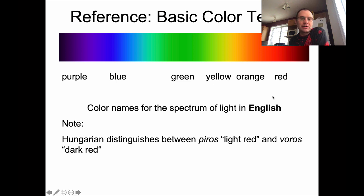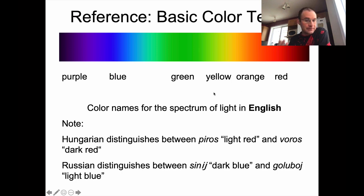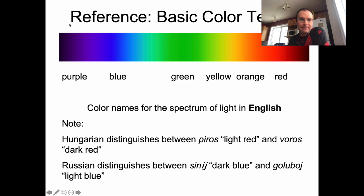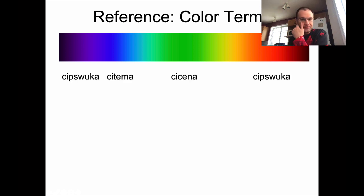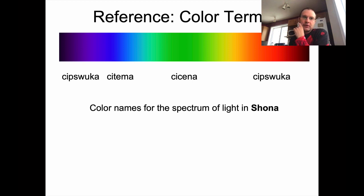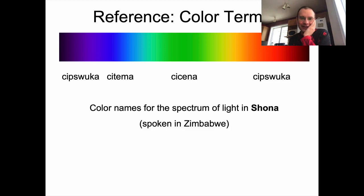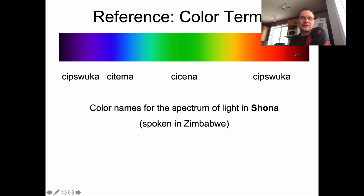Then there are languages that go in the other direction and have fewer distinctions than English. An example is Shona, spoken in Zimbabwe. In Shona, you have citema meaning something like blue, cicena meaning something like green, then cipsuka on either end of the spectrum — so red and purple are kind of the same thing. There's no strict term for yellow. I actually encountered this in undergrad in a field methods class with a Shona speaker, and I asked him the word for yellow and he thought a long time and just couldn't come up with anything. His mind was processing the color spectrum in a totally different way.